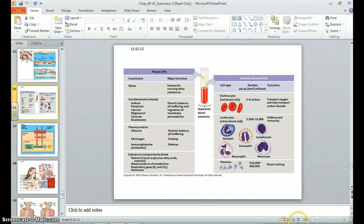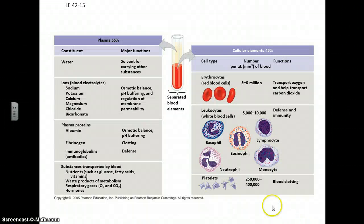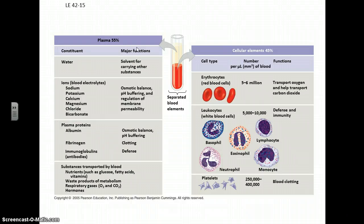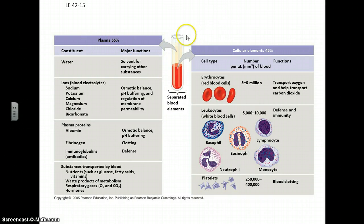Let's finish up Chapter 42, Circulatory and Respiratory Systems. Blood, an important part of the circulatory system, is this liquid that flows through our heart, arteries, veins, and into the capillary beds. What does it consist of? Well, there's a liquid component — the plasma — and a cellular component.